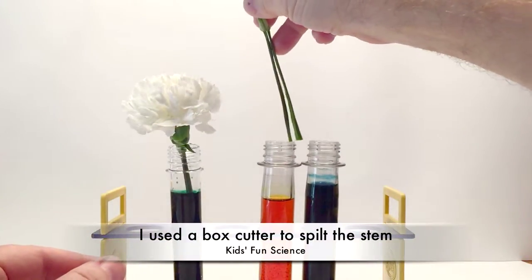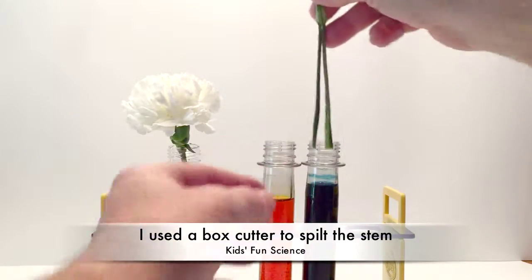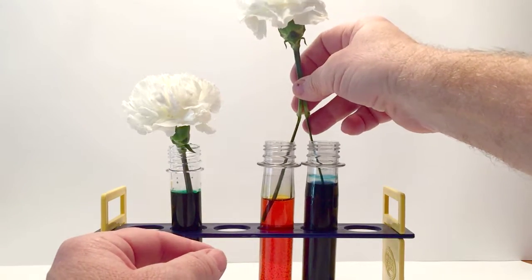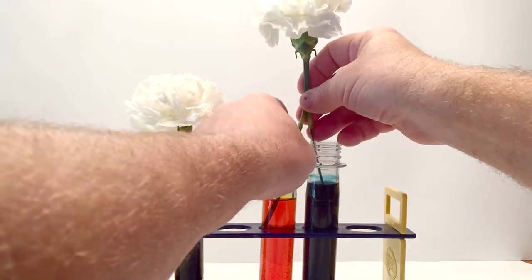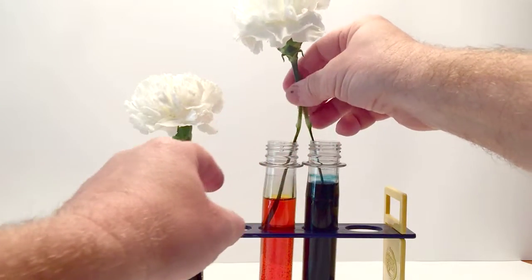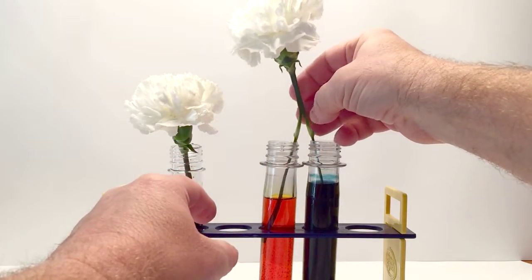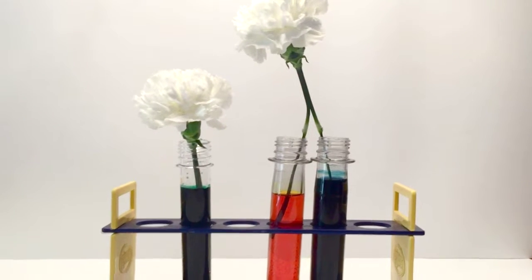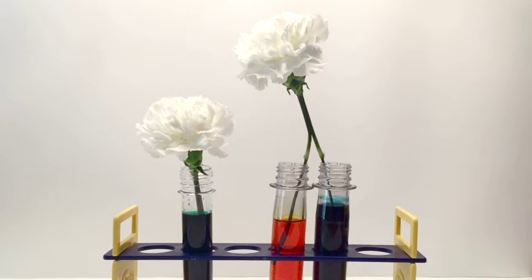The second one's a little more interesting where I cut down the middle with an exacto knife of the stem of the second carnation and I put in half the stem in yellow and half in blue. And we're going to see if it's going to turn yellow or blue, or will it, when it's pulling up the water, turn green.